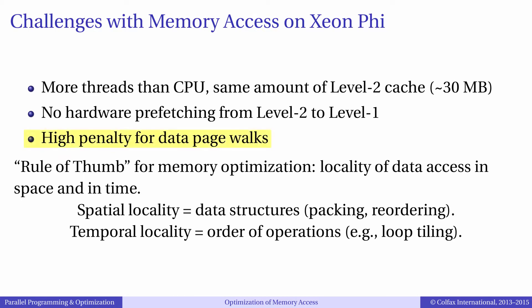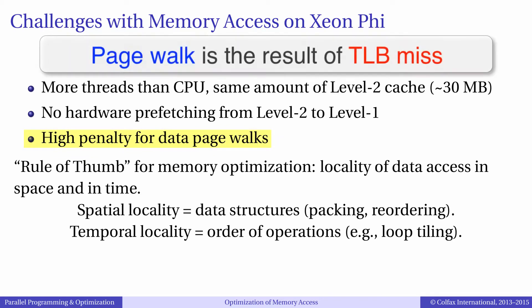For algorithms that access large regions of memory randomly, data page walks are more expensive on Xeon Phi than on Xeon because of poor serial performance.